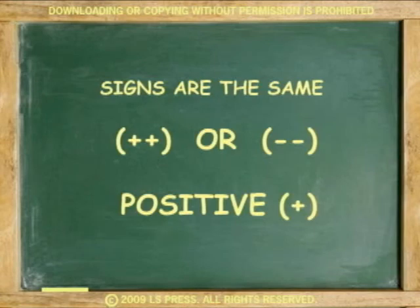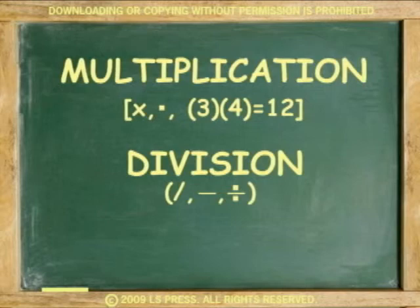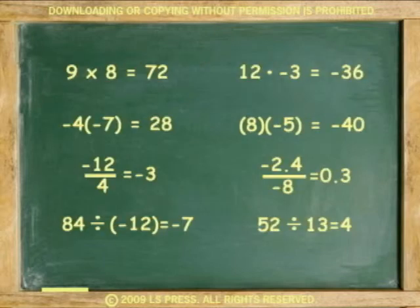Now, if the operations involve multiplication and division, the same rules still apply: signs are the same, turn to one positive sign; signs are different, turn into one negative sign. Remember, multiplication is indicated with an x, dot, or parenthesis, like in 3 times 4 equals 12. Division is indicated with a slash, fraction line, or division sign. These following examples will cover any combination you may encounter in handling positive and negative numbers in multiplication and division.